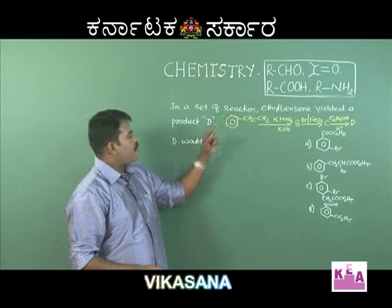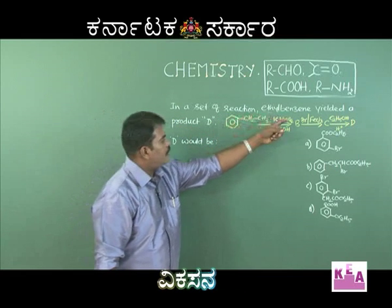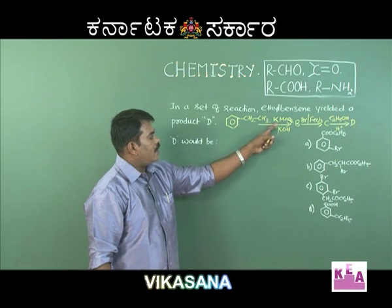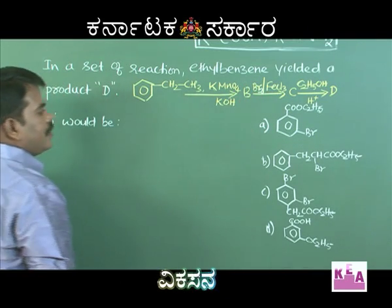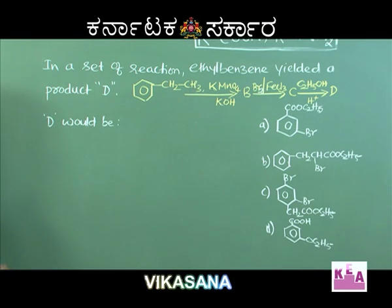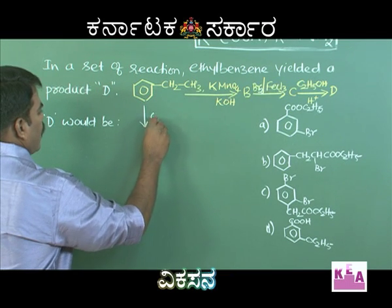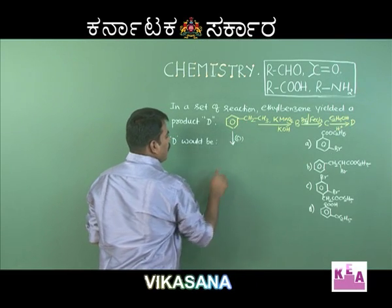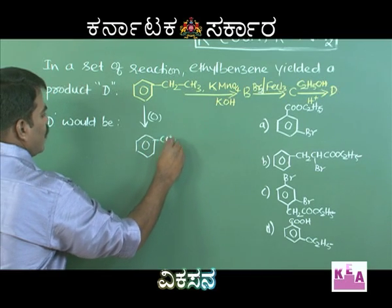The next question: in a set of reactions, ethylbenzene yielded product D. Ethylbenzene upon oxidation with alkaline KMnO₄ gives compound B. The side chain carbon is oxidized — benzylic hydrogen — so you get a COOH group, meaning the product is benzoic acid.